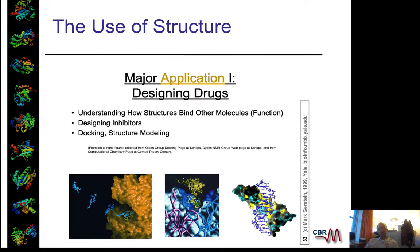An application is drug binding. Basically, almost all drugs developed today have used structural information. You find a pocket where you want to bind something and try to optimize a small chemical ligand to fit it. You then have to test it experimentally — it's not the only thing used, but it's a useful part of the process.